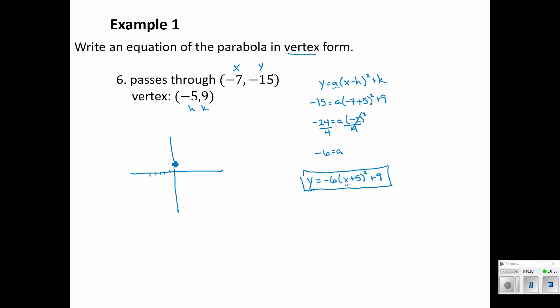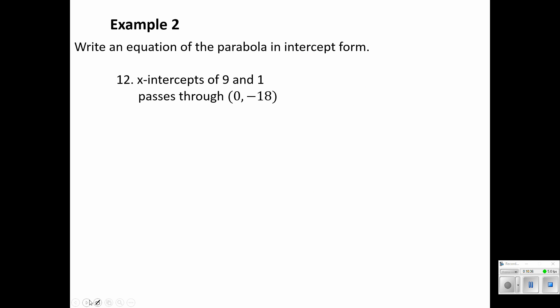So we've got the point negative five, nine right here. It passes through the point negative seven, negative 15 way down here. You can see it has to be a pretty steep downward parabola in order to do that, to have this vertex and pass through that point down below. So our equation looks pretty good. We've got the left five and up nine in our vertex, and it's pointing down steeply as it needs to do. So we've got some reference, some ways of checking our answers to make sure that it makes sense.